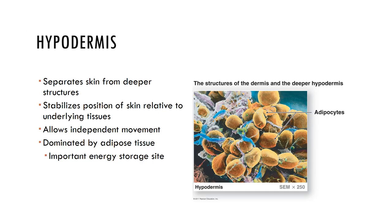The subcutaneous layer is the hypodermis. It connects our skin to underlying muscle and is composed of adipose connective tissue and some loose dense irregular connective tissue. Some sweat glands are present along with vessels and nerves, and it functions as energy storage, insulation, and cushioning protection.